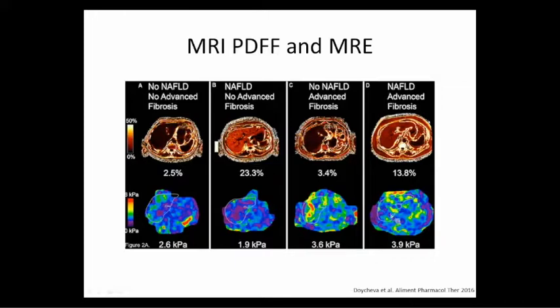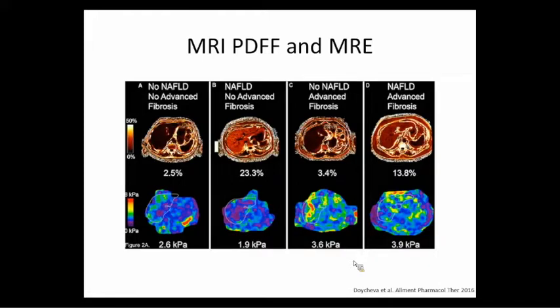These are representative pictures of the newer generation of MR elastography, which outlines the liver and quantifies the amount of scarring. You may note the numbers are a little different compared to the FibroScan because MRE uses Young's modulus — a different physical modality. If you want to convert from MRE to FibroScan units, multiply by two and a half.